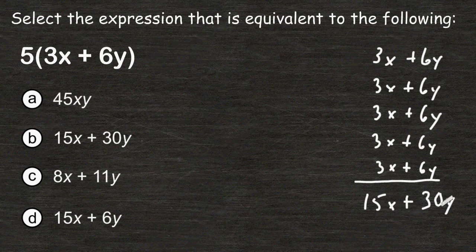And we can see that choice B is equivalent to the expression 5 sets of 3x plus 6y. But there is a shorter way than having to write that expression over and over 5 times.